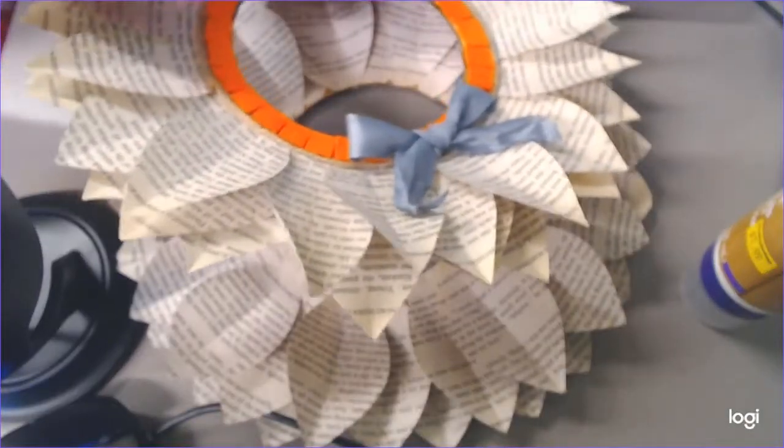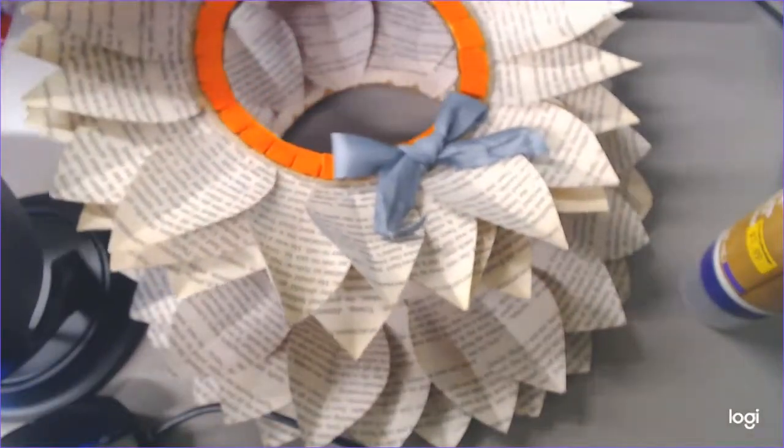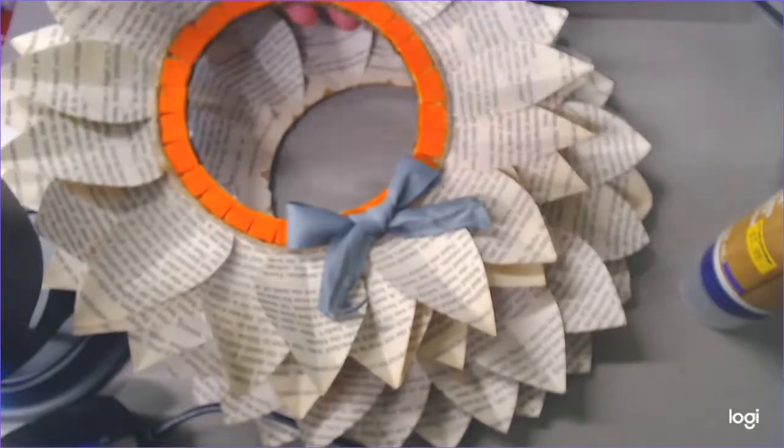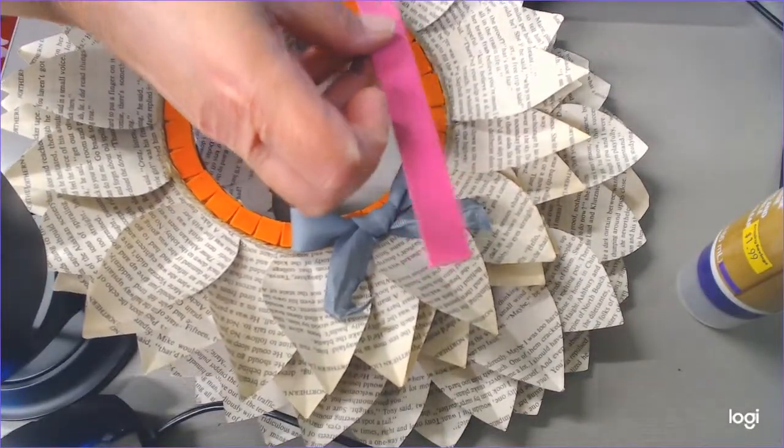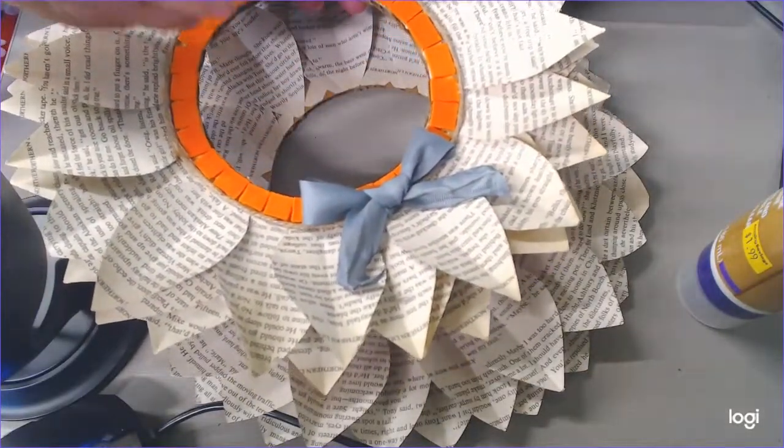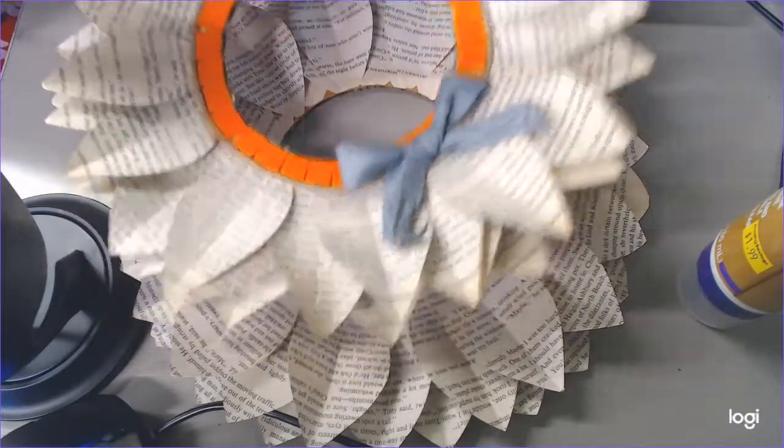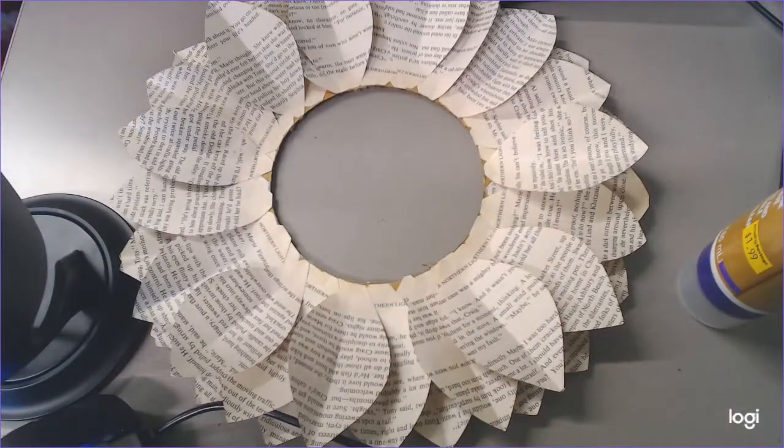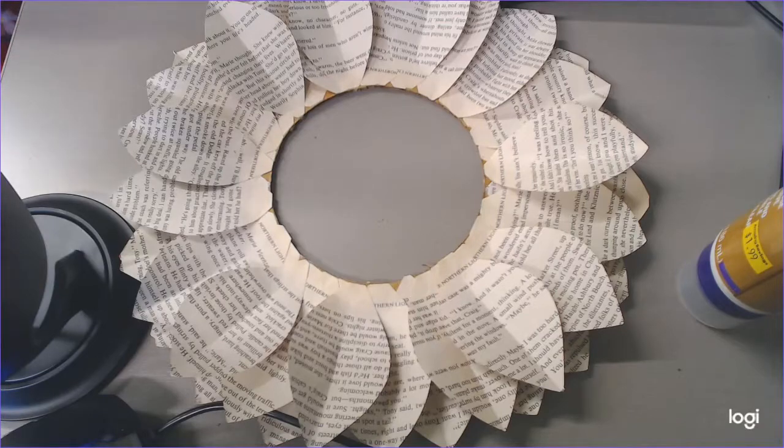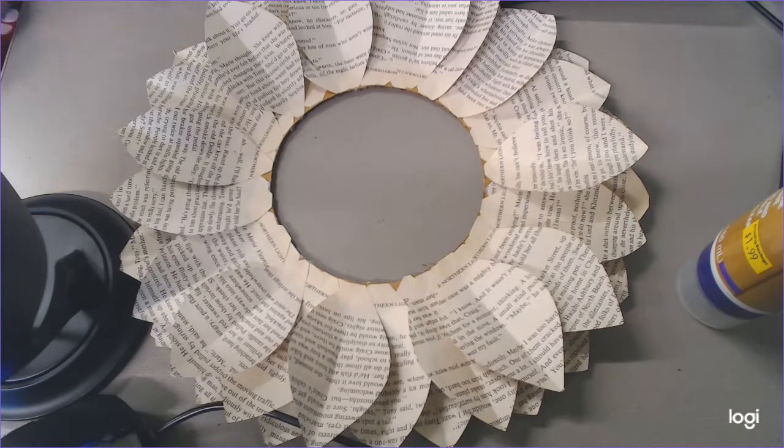On this one, what I did was I used the foam stick-on that I gave you and I cut them into little squares and I stuck them on. I also thought of something else—instead of doing squares you can actually do triangles if you wanted to.